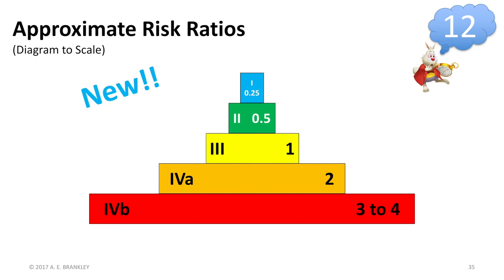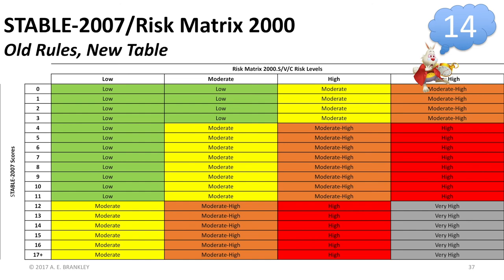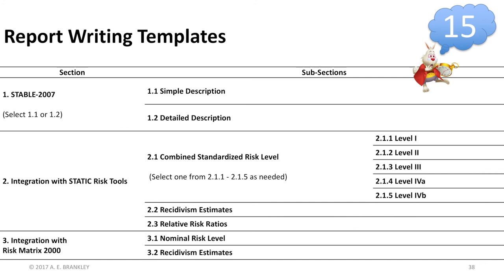These standardized risk levels are associated with risk ratios and absolute recidivism rates. We have revitalized the Risk Matrix 2000 table, but the rules have not changed yet. We have also created detailed report writing templates and a guide to help you select which templates are best for you.